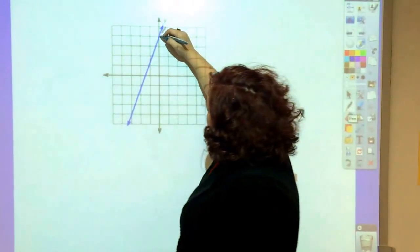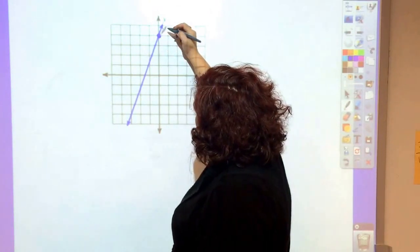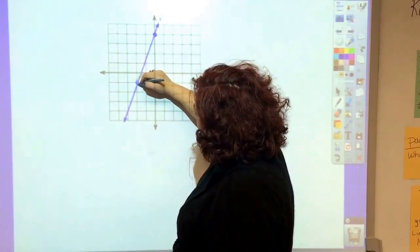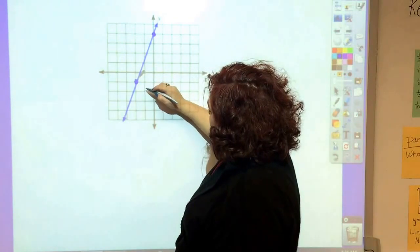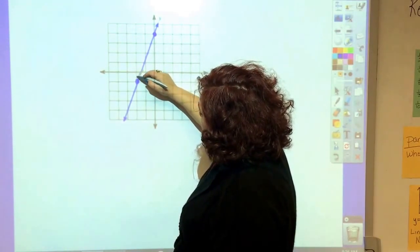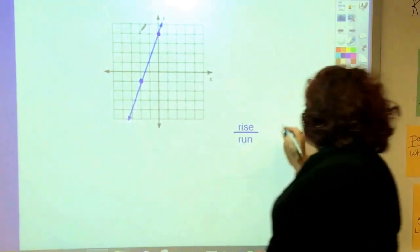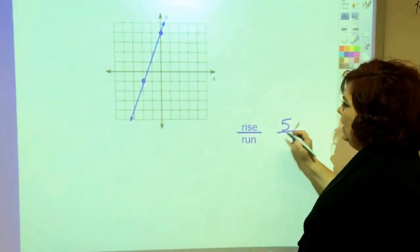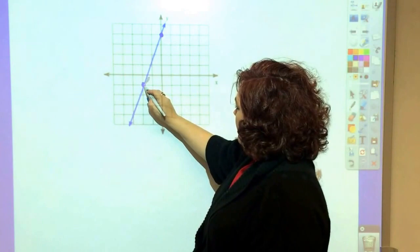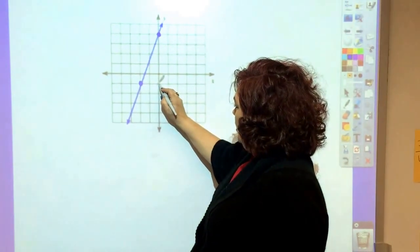So here is a point on the graph and here is another point on the graph. And so I go rise 1, 2, 3, 4, 5. 5 is the rise and the run is 1, 2.